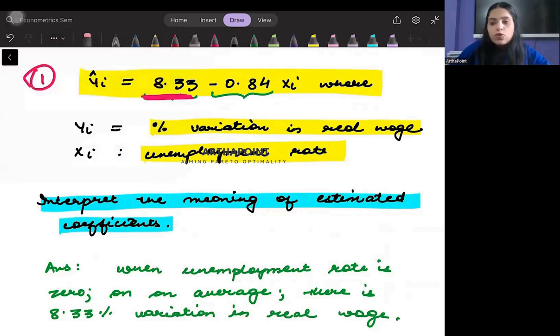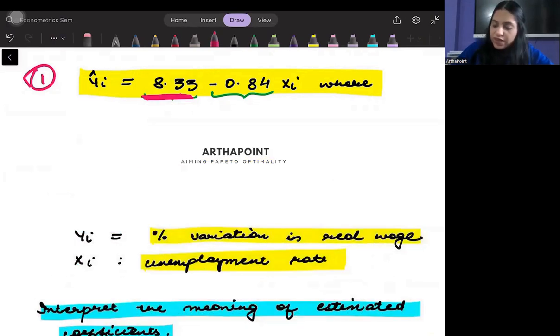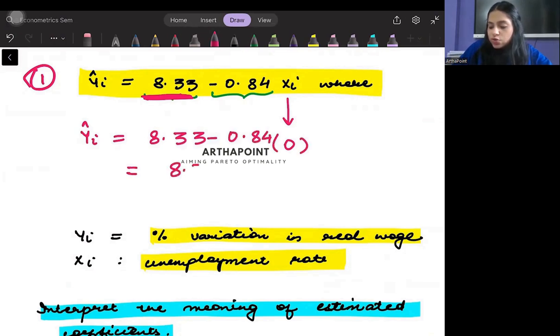Notice that you will get this 8.33 only when you plug in xi as 0. So when I go ahead and plug this value as 0, I will get my yi hat is equal to 8.33 minus 0.84 into 0, and this is going to be 8.33.